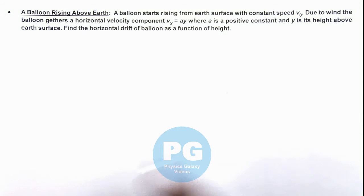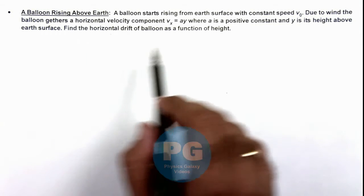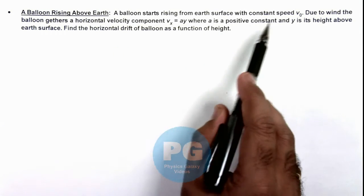In this illustration we'll analyze a situation when a balloon rises above the earth. Here we are given that a balloon starts rising from earth surface with a constant speed v not.